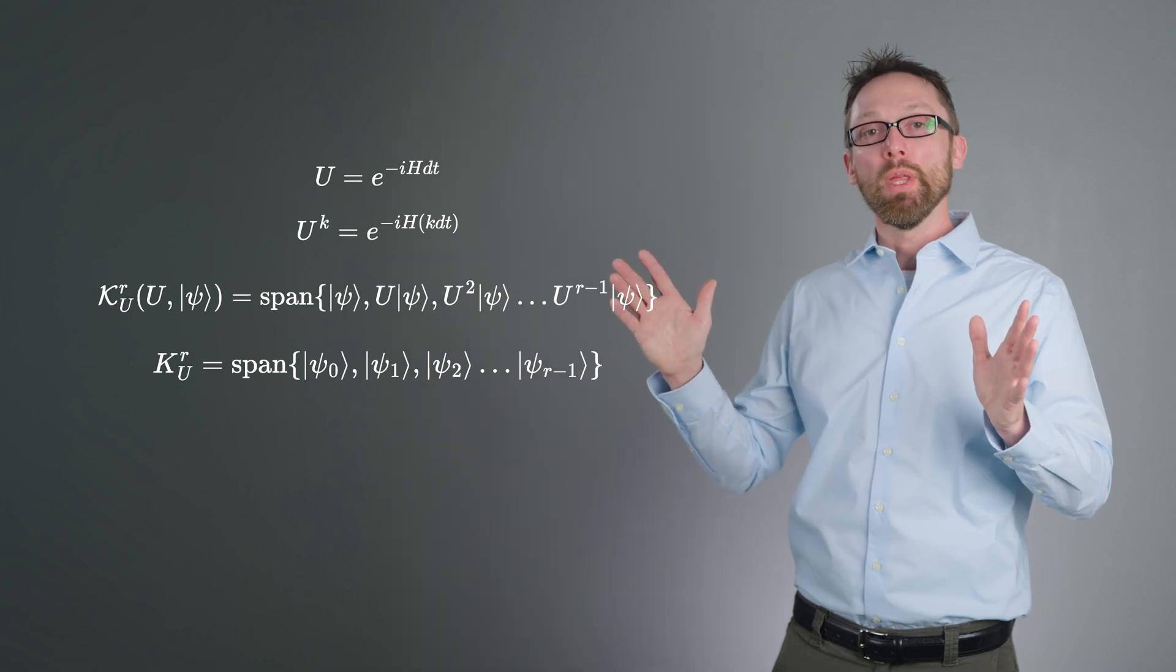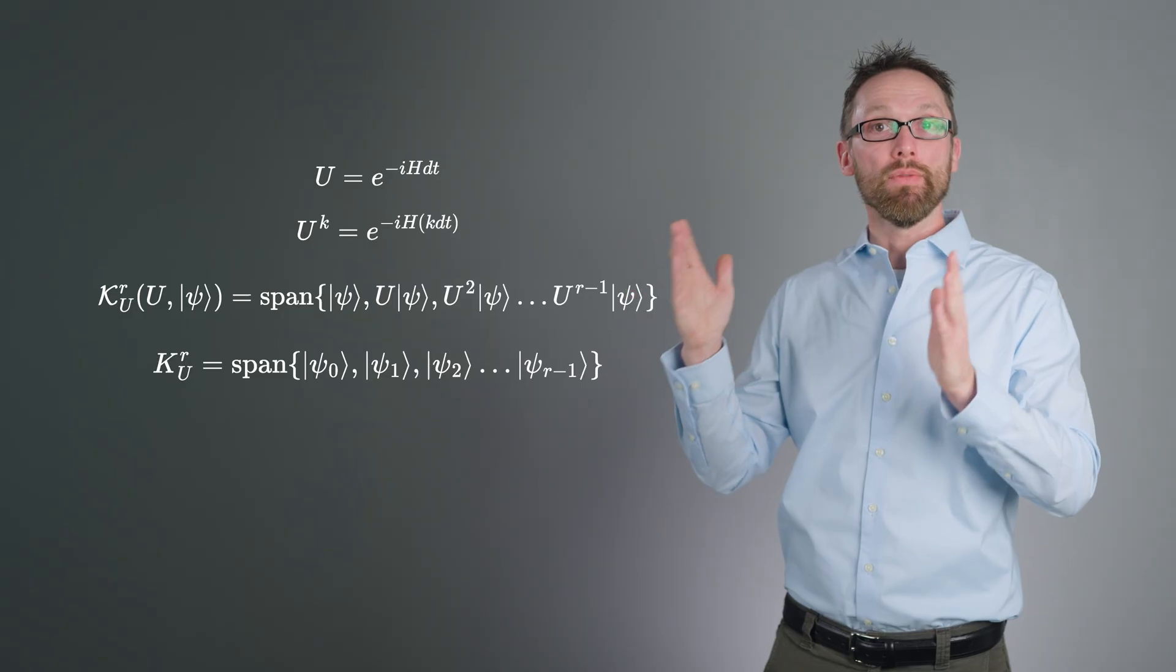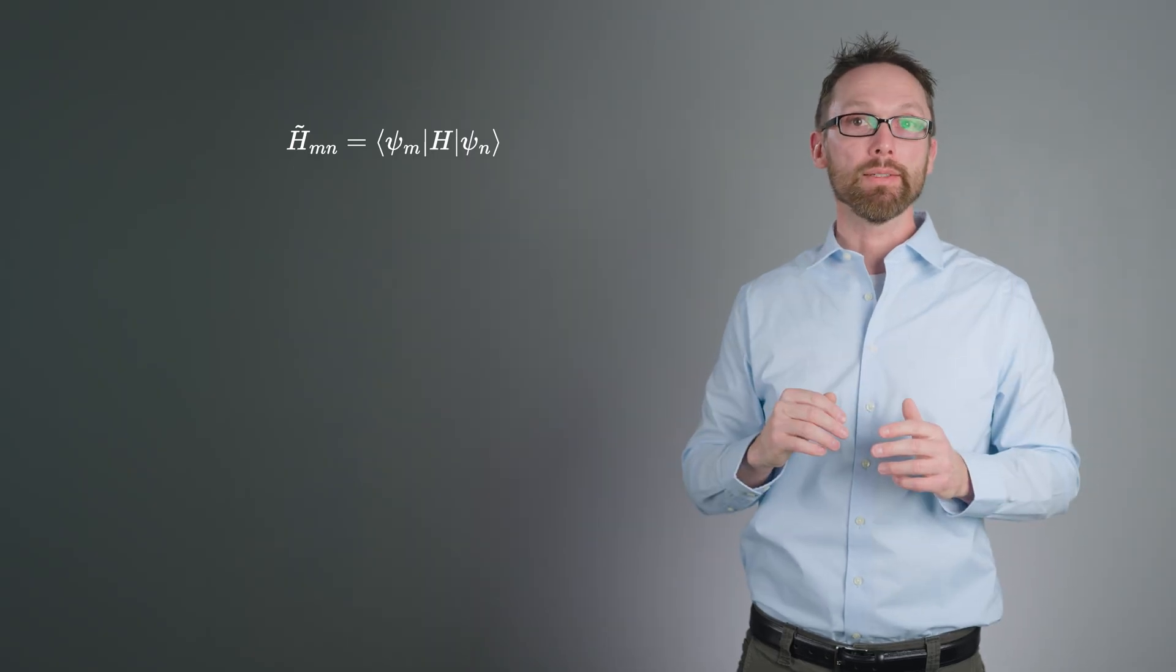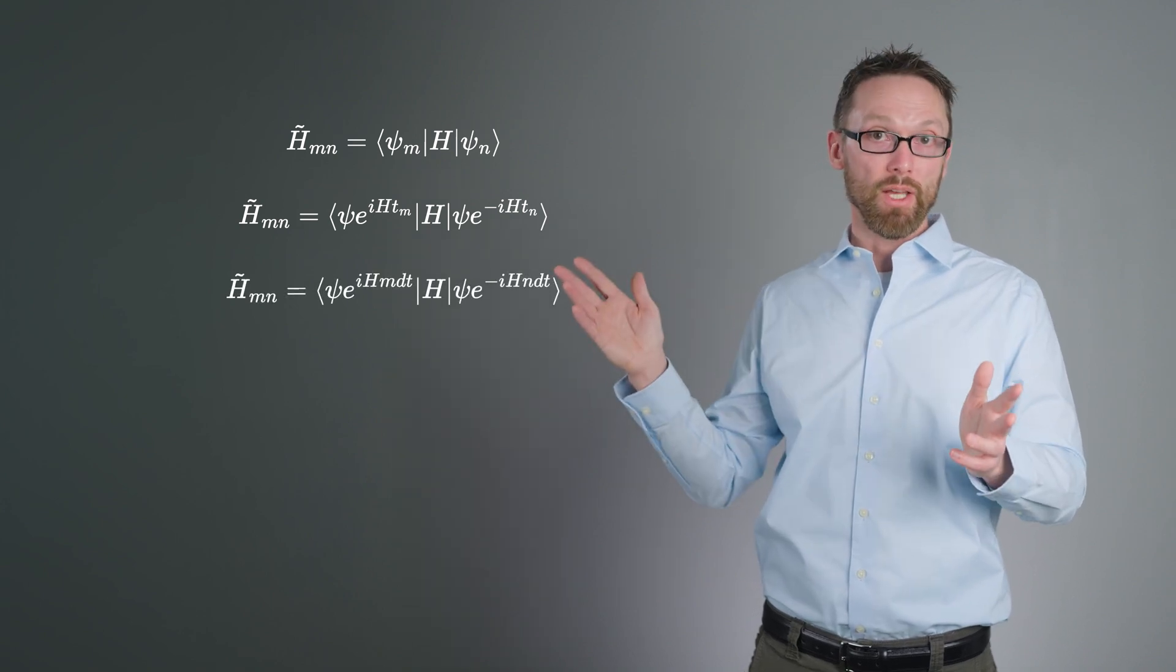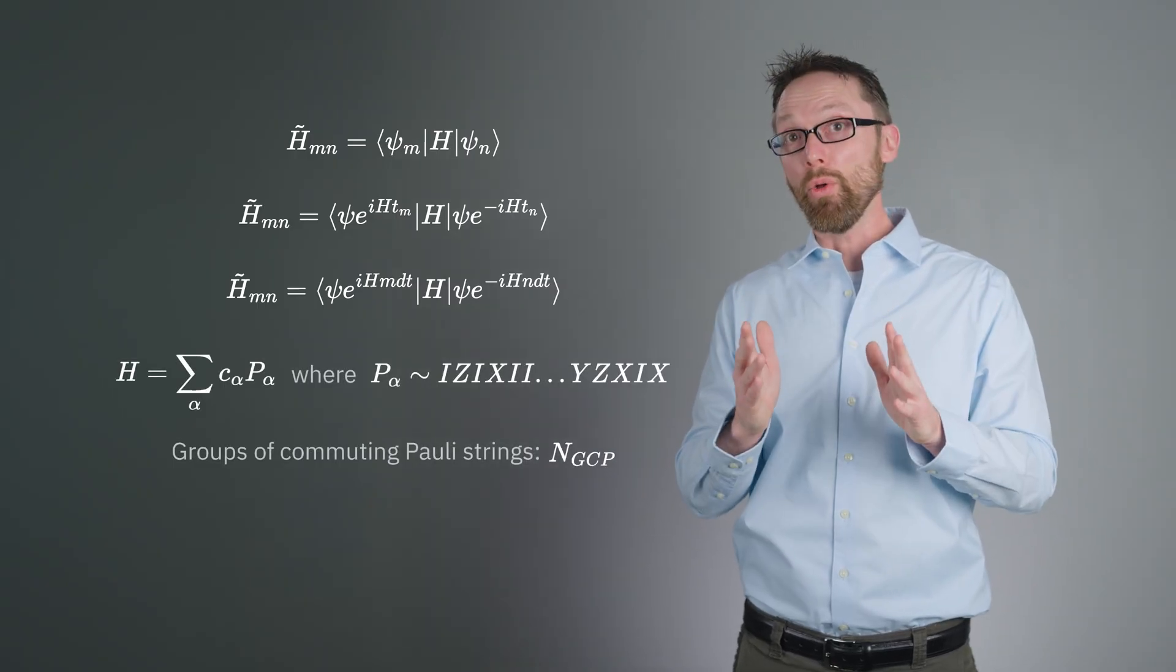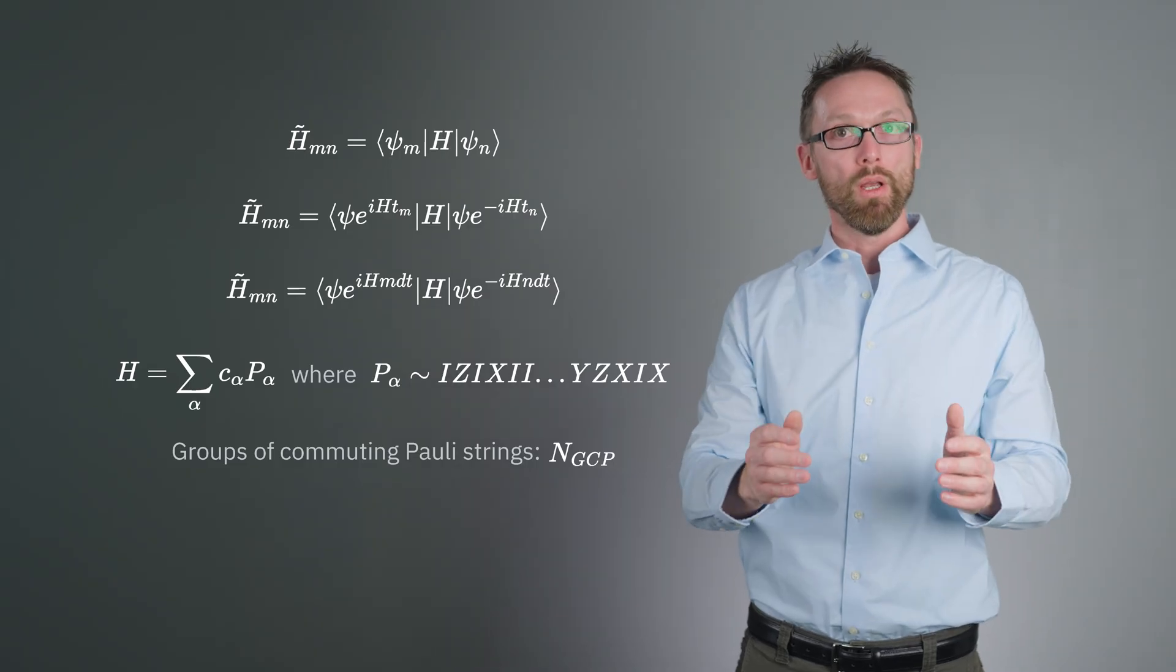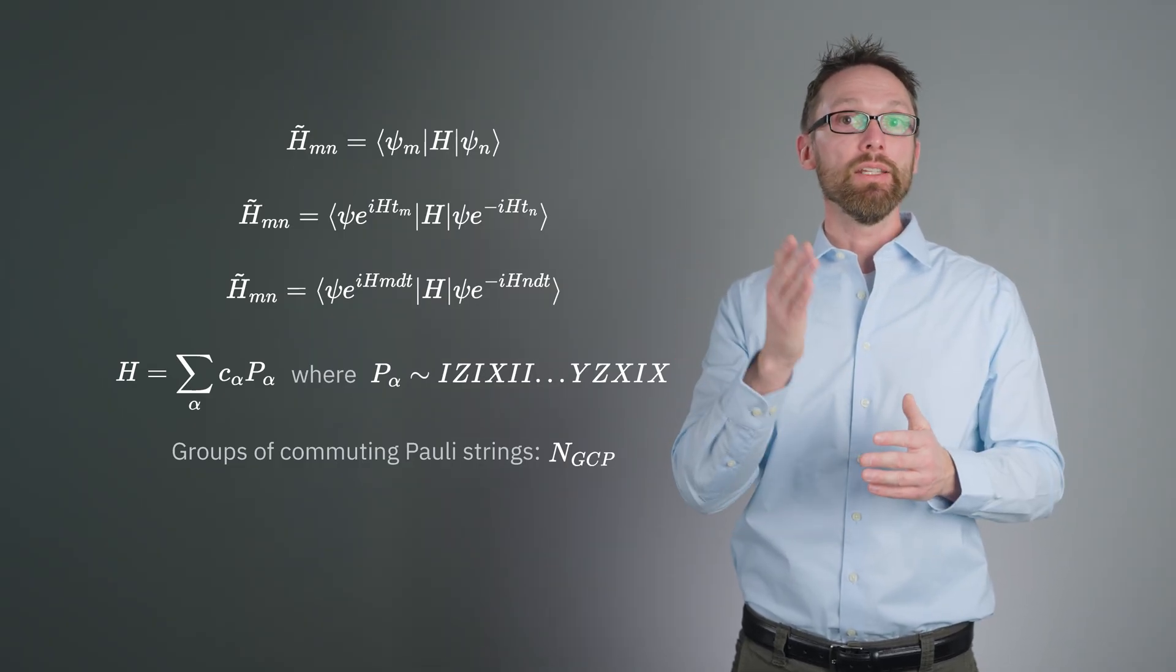Here, powers of u become different time steps. The k-th power of u is stepping forward by a time k times dt. We can label the element of the subspace that is time evolved for a total time k dt as psi sub k. We can project our Hamiltonian h onto the unitary Krylov subspace k-ur. In other words, we calculate each matrix element of h in the k-ur basis. We'll refer to this projected matrix as h tilde. The matrix elements of h tilde are given by these expectation values, which can be estimated using the quantum computer. Keep in mind that h can be written as a sum of poly operators on different qubits, and that not all poly operators can be measured simultaneously. We can sort the poly terms into groups of commuting terms and measure all of those at once, but we may need many such groups to cover all the terms. So the number of distinct commuting groups into which the terms can be partitioned n-gcp becomes important.